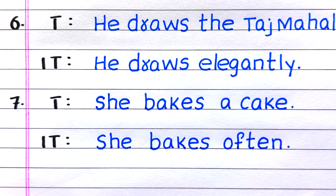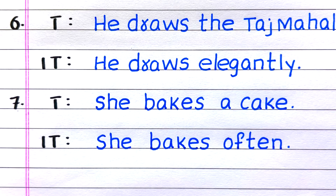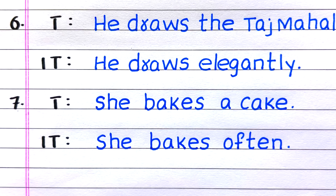Sixth example of a sentence with a transitive verb: 'He draws the Taj Mahal.' Sixth example with an intransitive verb: 'He draws elegantly.' Seventh example — transitive: 'She bakes a cake.' Intransitive: 'She bakes often.'